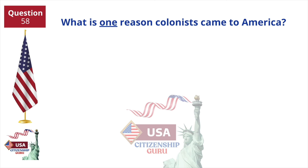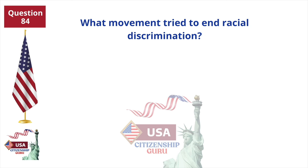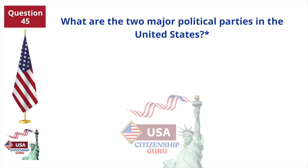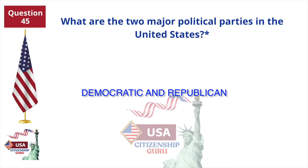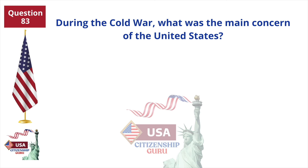What is one reason colonists came to America? Freedom. What movement tried to end racial discrimination? Civil rights movement. What are the two major political parties in the United States? Democratic and Republican. During the Cold War, what was the main concern of the United States? Communism.